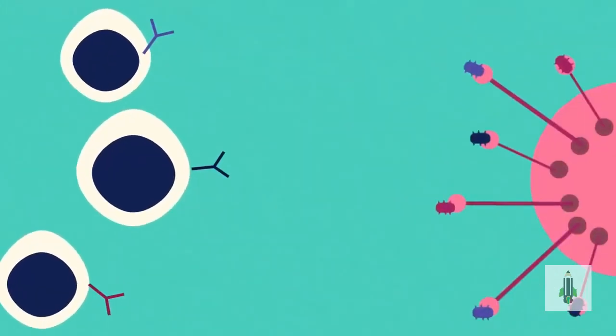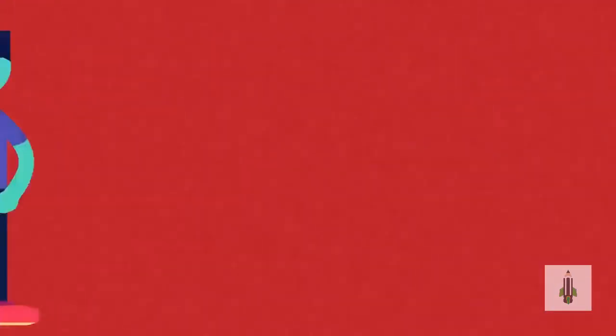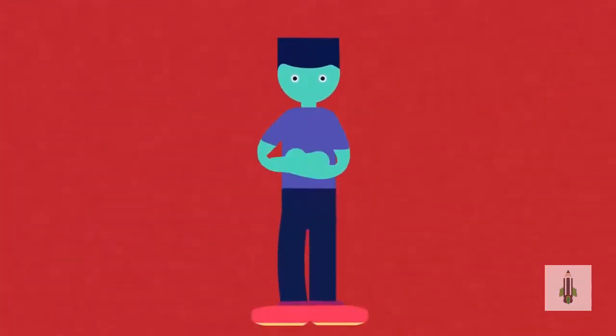Each antibody is very specific - it will only attack one type of bacteria. Other lymphocytes produce antitoxins, which combine with the invaders' toxins and make them harmless. Sometimes the body cannot produce antibodies naturally or fast enough, and so we can have vaccinations to help us out.